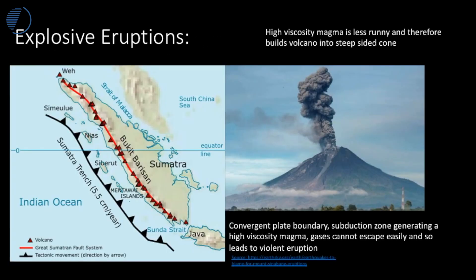We're going to start with explosive eruptions. Here you can see the Indian Ocean, and this plate here is travelling in this direction and is being subducted underneath this plate here. This is the island of Sumatra and you can see all these triangles represent volcanoes. Explosive eruptions are associated with subduction zones.